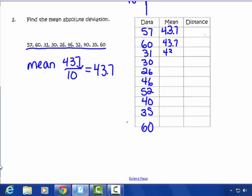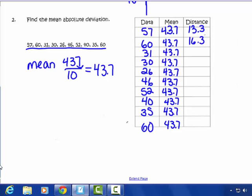And I have to find the distance, the absolute value distance, of each of my data points from this mean of 43.7. So I'm going to subtract each one of my data minus my mean and take the absolute value. So, for instance, 57 minus 43.7, 13.3. 60 minus 43.7 gives me 16.3. 31 minus 43.7 gives me negative 12, but its absolute value would be 12.7.